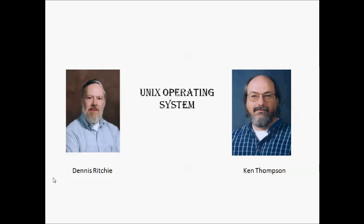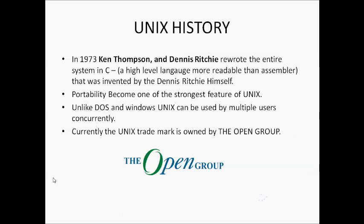The operating system they built in C is called the Unix operating system. In 1973, Ken Thompson and Dennis Ritchie wrote the entire system in C, a high-level language more readable than assembler, invented by Dennis Ritchie himself. Previously, operating systems were developed in assembly language, but Unix was developed in C. The portability became one of the strongest features of Unix — it can be ported from one hardware to another without much disturbance.